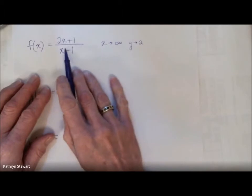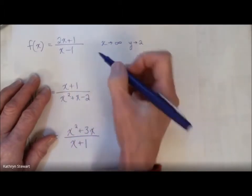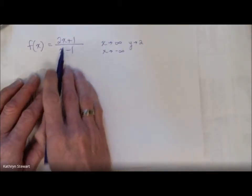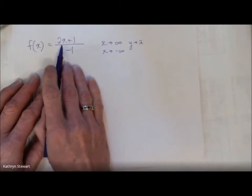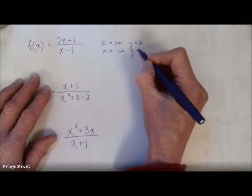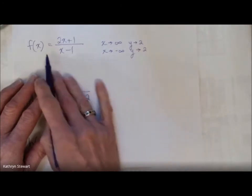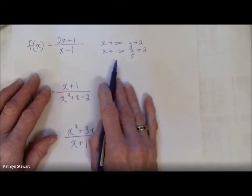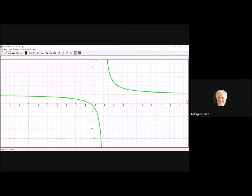If I plug in negative 100 for x, I get about two. If I plug in negative a thousand for x, that's negative two thousand divided by about negative a thousand — that's honing in on two. So this f of x is going to have a horizontal asymptote. Let's look at the picture. Here's f of x. You can see clearly that y equals two, that horizontal asymptote, describes its end behavior.